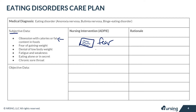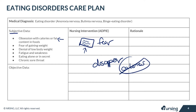Those with bulimia nervosa might not be as obsessed with calories, but instead they might disappear after eating because they're going to vomit, which prevents their body from absorbing the calories. The patient may also have a chronically sore throat and even a scratchy voice due to repeated vomiting.